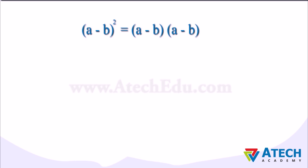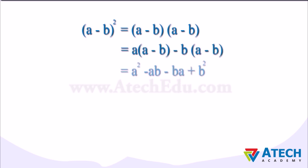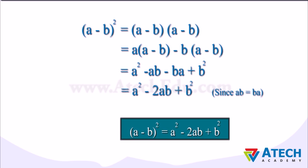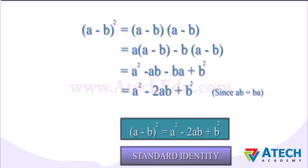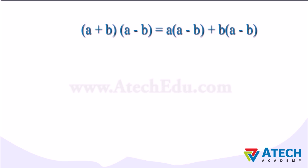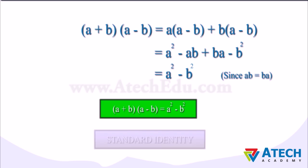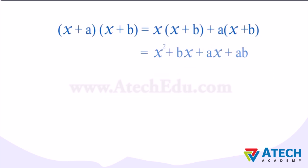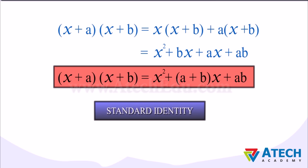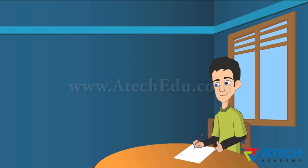Similarly, (A − B)² can be written as (A − B) multiplied by itself. Upon simplification, we get A² − 2AB + B². The product of (A + B) and (A − B) can be simplified as A multiplied by (A − B) plus B multiplied by (A − B). Upon further simplification, we get A² − B². The next standard identity is: the product of (X + A) and (X + B) equals X² + X(A + B) + AB.